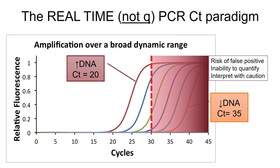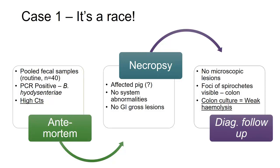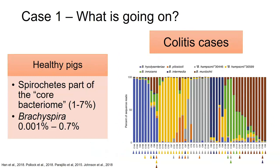Anyway, I wanted to take the time to discuss that because it was critical in this case — they had a positive response from the diagnostic lab, but on a high CT. Clinically, there was nothing. We walked around the barn; everyone was healthy. No indication whatsoever of swine dysentery. We necropsied a few healthy pigs — no GI gross lesions whatsoever. Submitted for regular diagnostic workup: histopath all around the GI, no microscopic lesions. But we could visually see spirochetes on Warthin-Starry silver staining — the S-shaped bacteria hanging around the colon. And colon culture came back weakly hemolytic.